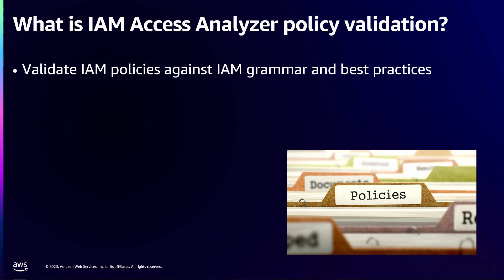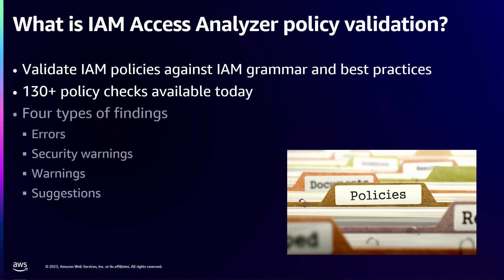It'll tell you things like your policy is not syntactically correct and will never work. It'll also tell you things like your policy is over-permissive, potentially allowing too many permissions, or that you have a missing condition key for a specific action — which is a security problem. There are over 130 checks available today, and the Access Analyzer team is constantly adding new ones. Findings are classified into four types: error findings, which mean your policy just won't work; security warnings, which typically mean your policy is over-permissive or missing an important condition key; and then warnings and suggestions, with suggestions being the lowest severity — the nice-to-haves.